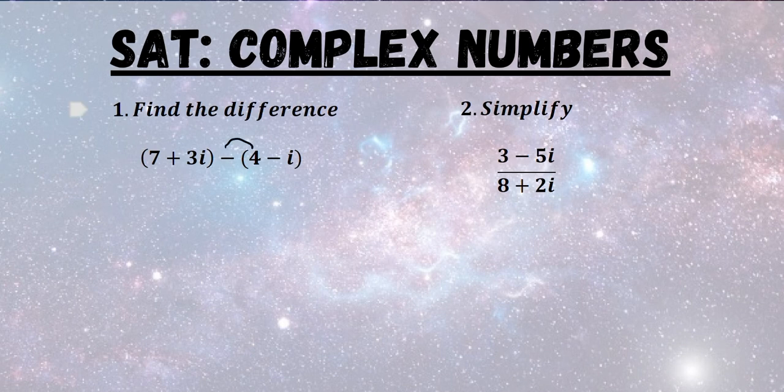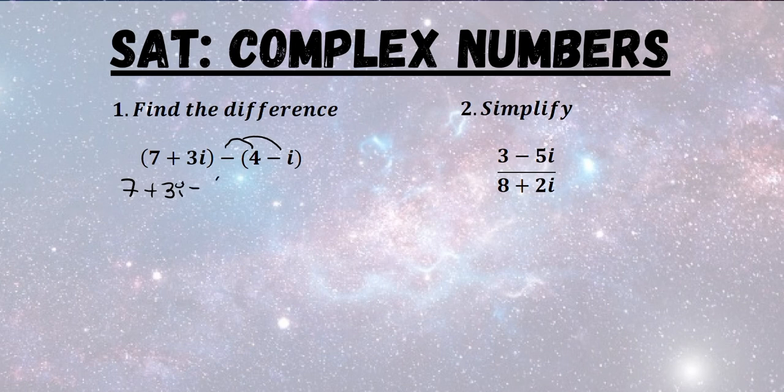First we need to distribute the negative sign to the right side of the parenthesis. That's going to give us 7 plus 3i minus 4 plus i.